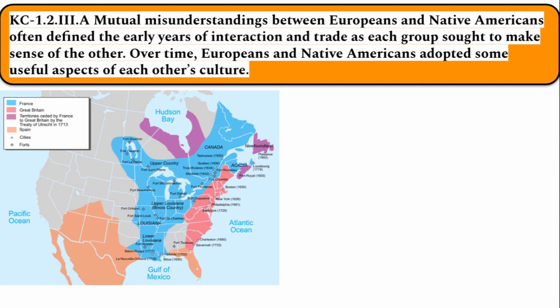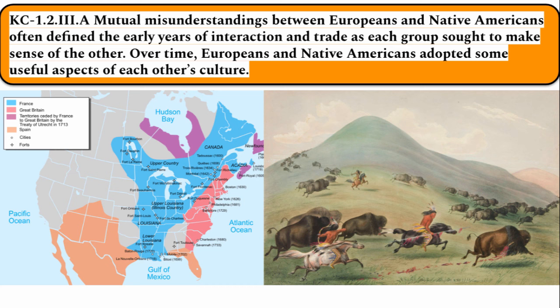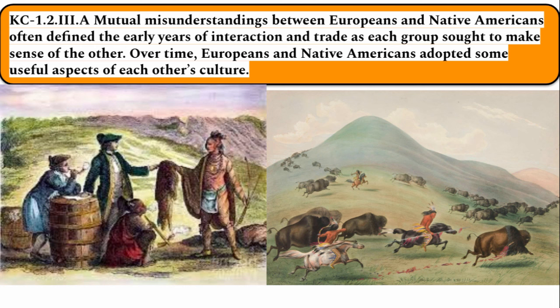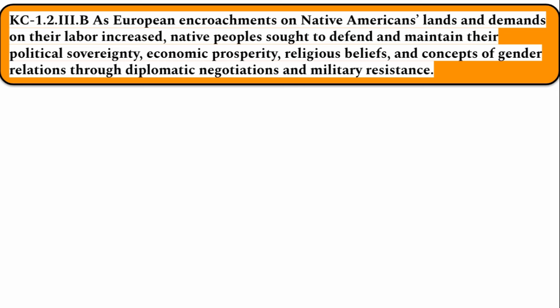The map right there shows colonization as of the 1750s, but it's important to note that many tribes are going to adapt in different ways. Tribes on the Great Plains, such as the Sioux, are going to adopt the horse. Tribes such as the Huron will readily trade with French colonists in the Ohio River Valley areas, and the fur trade is going to develop, so you're going to see a variety of responses from Native American people. As European encroachments on Native American lands and demands on their labor increased, Native peoples sought to defend and maintain their political sovereignty, economic prosperity, religious beliefs, and concepts of gender relations through diplomatic negotiations and military resistance. You will see, especially when looking at Spanish and French colonization in North America, there will be moments of negotiation, cooperation, and trade, but Native people will also utilize military resistance at times. Regardless of method of resistance, Native people sought to maintain cultural and political autonomy — their independence, their cultural traditions, basically their way of life.